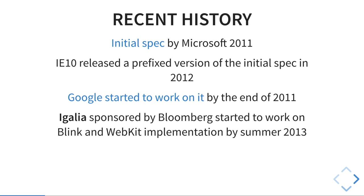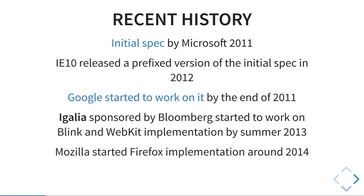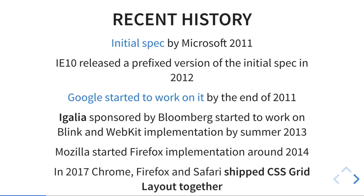Bloomberg, which is a kind of power user of the web platform because they have very complex UIs, sponsored EGALIA to work on the implementation in Chromium and WebKit. We started on that by summer 2013. On the Firefox side, Mozilla started around 2014. So at the end, 2017 — it takes a while, as you can see — and after lots of changes on the spec, lots of changes in the implementations and issues and all that, it was quite a unique event in the history of the web.